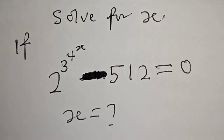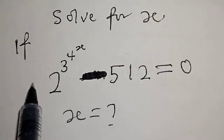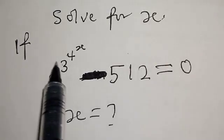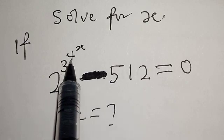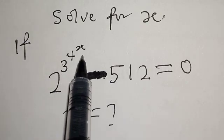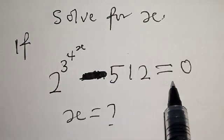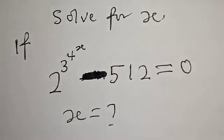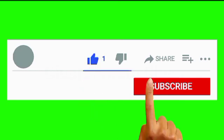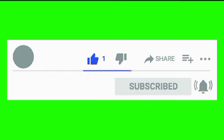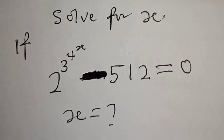Hi everyone, welcome to my class. In today's class, we want to look at how we can find the value of x from this given equation: 2 raised to power 3 raised to power 4 raised to power x, minus 512, is equal to 0. But before we proceed, please don't forget to like, share, comment, and subscribe for more new videos. Thank you.